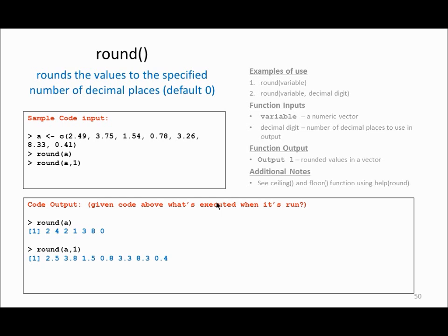Round is another function you can use when you want to get rid of decimal numbers in your data. For example, I have a variable a with some values. When I call round(a) without any second argument, it rounds to the nearest integer. So 2.49 converts to 2 because the first decimal digit is less than five. If the first digit after the decimal is five or greater, it rounds up. This way it rounds all your data to a whole number.